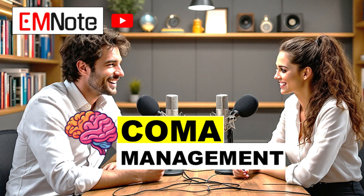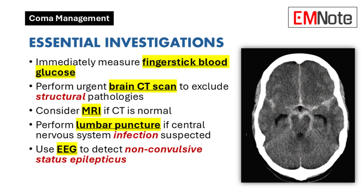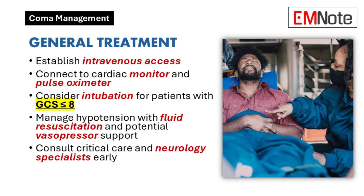The EEG looks at the electrical activity in the brain, and it's particularly useful for things like seizures — because sometimes seizures can be subtle. You might not even see any outward signs, especially if the patient is already unconscious. The EEG can also help us assess the depth of the coma and get a sense of overall brain function. Once we have the cause figured out, we can start thinking about treatment.